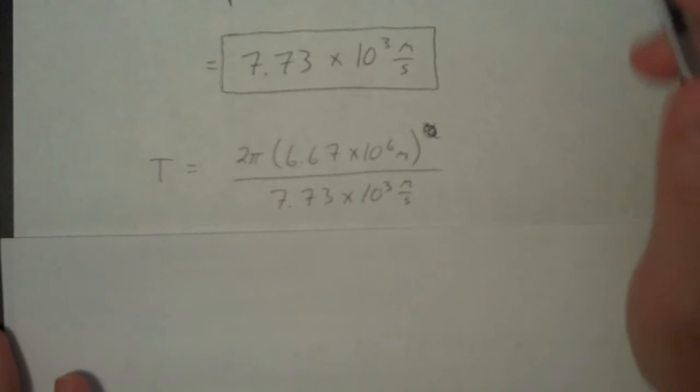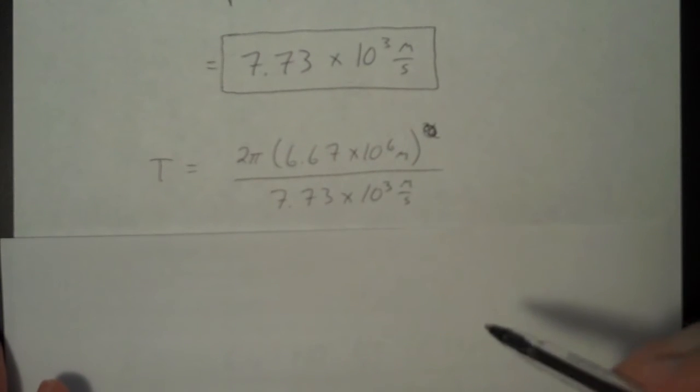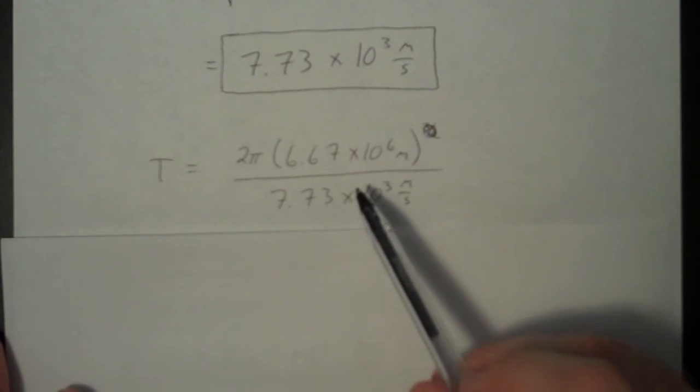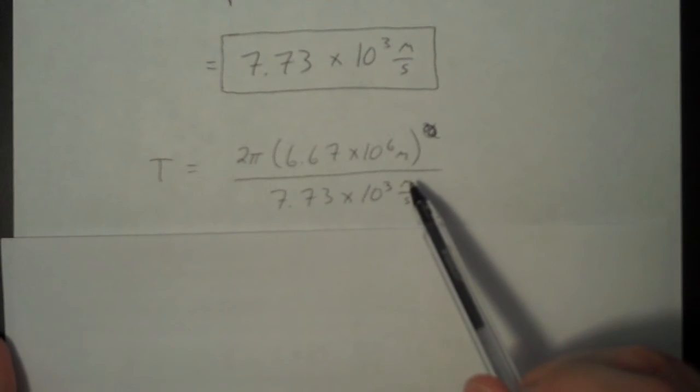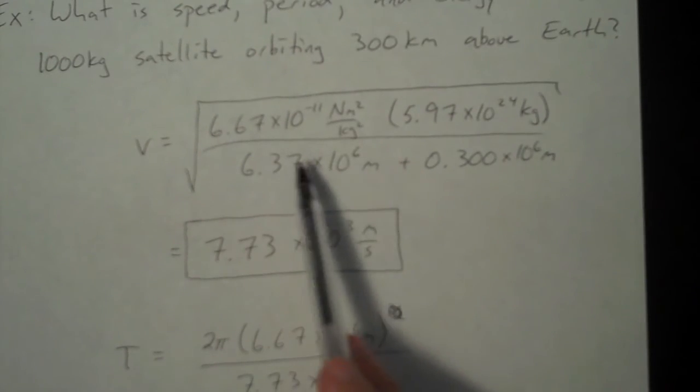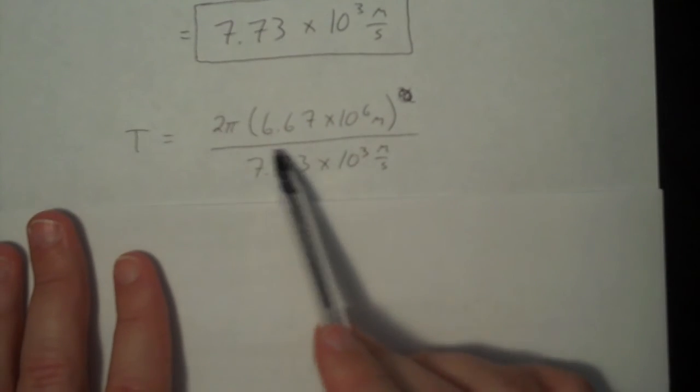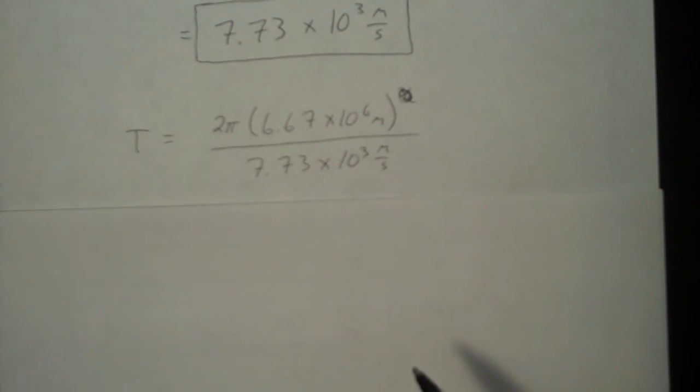What is the period? Well, the period is going to be 2 pi times the distance from the center of the Earth. So that's just adding these two up, divided by the speed that we just found.